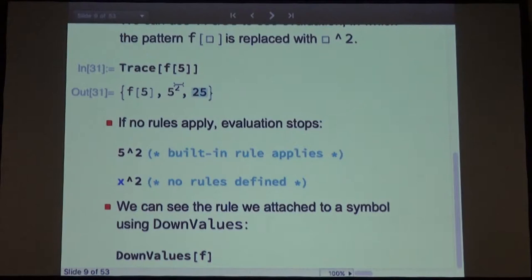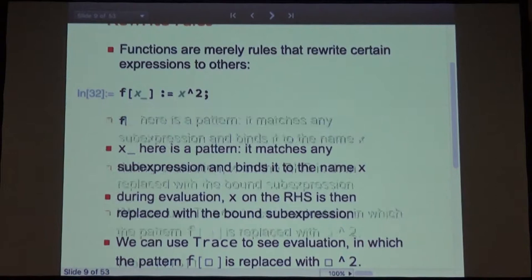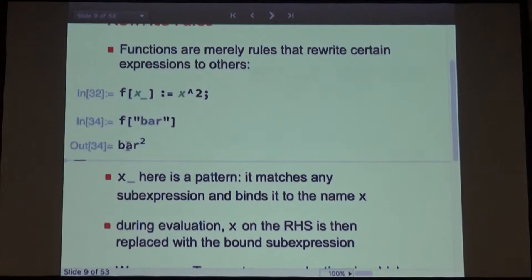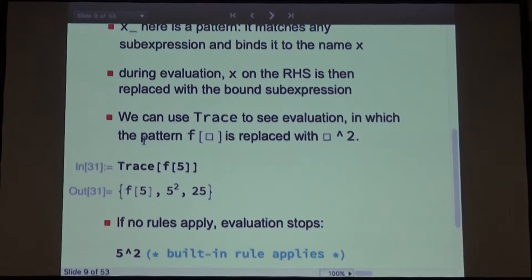Audience question: can x be anything, or does it have to be a number? In this case it's defined to work for anything, but for types like images, if they don't have a squared operation defined, it simply doesn't simplify further — you don't get a type error. If you say foo of bar, you get bar squared. For particular types like string, or if you define your own type, you can tell it what squared means for that.